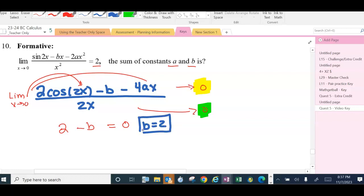But it also shows me I have to do L'Hôpital's rule again. So I will. The derivative of 2 cosine of 2x is negative 4 sine of 2x, the derivative of b is now 0, and the derivative of negative 4ax is negative 4a. The derivative of 2x is 2, and this must finally equal 2.